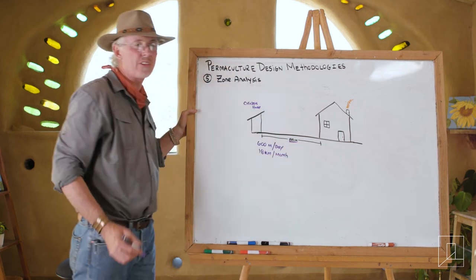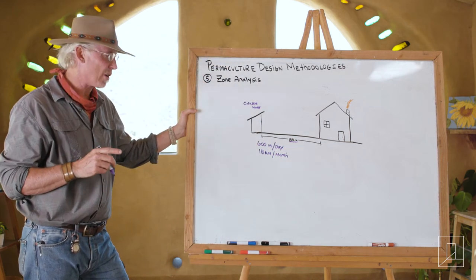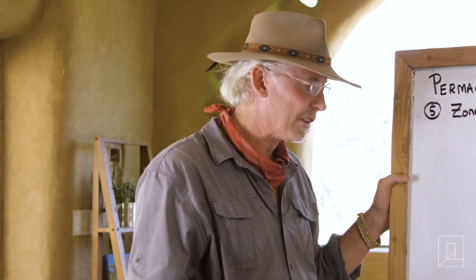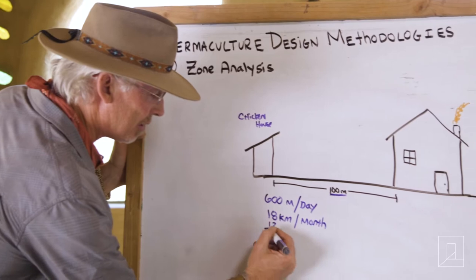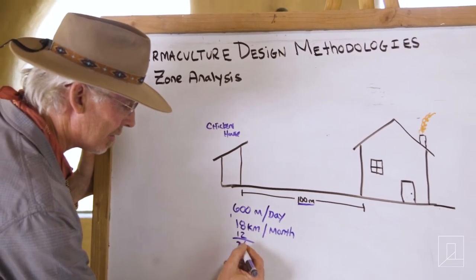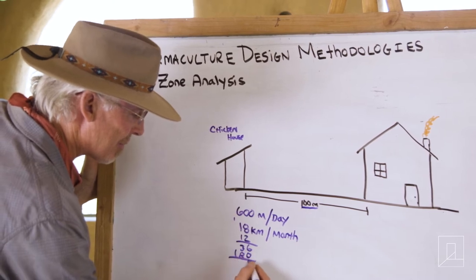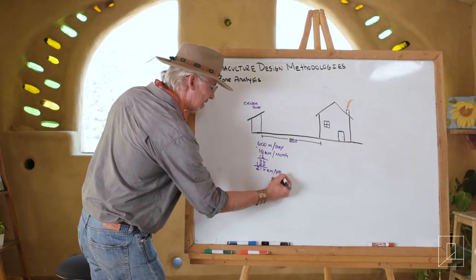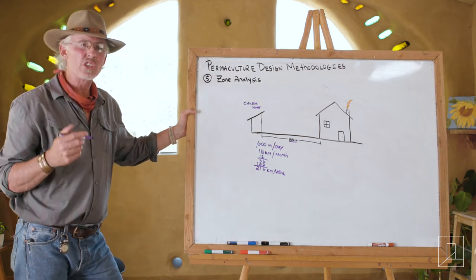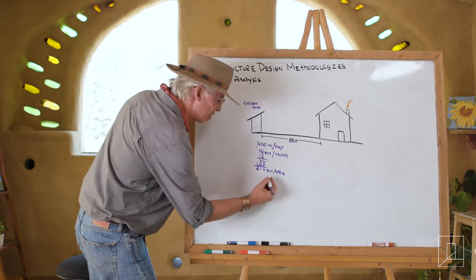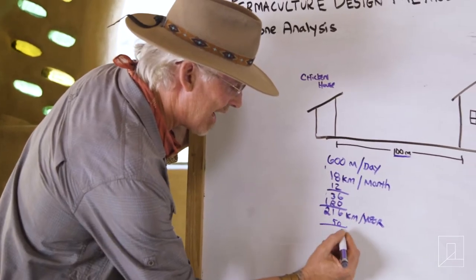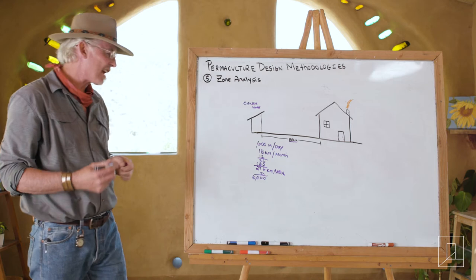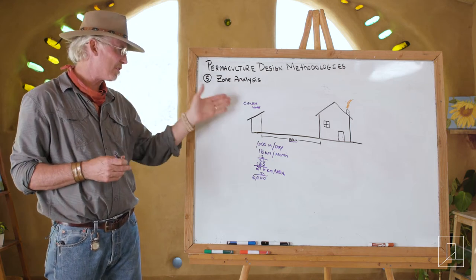I've seen this before — even farther than 100 meters — because people didn't want it near their home. But what they weren't calculating was the amount of energy it takes to actually tend it, and that can be very costly over time. Over 12 months, that's 216 kilometers a year. And if you do this for 50 years, you're literally traveling over 10,800 kilometers tending chickens.